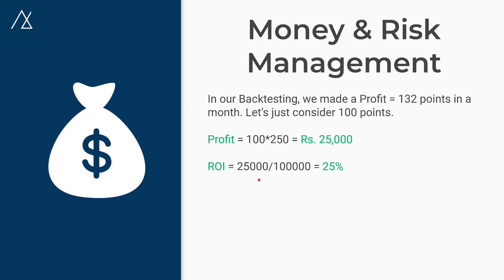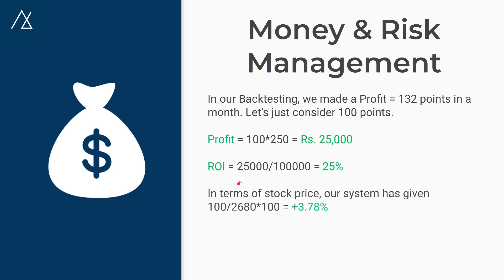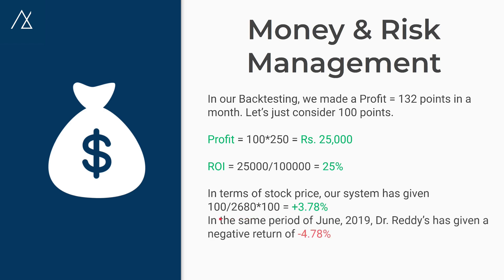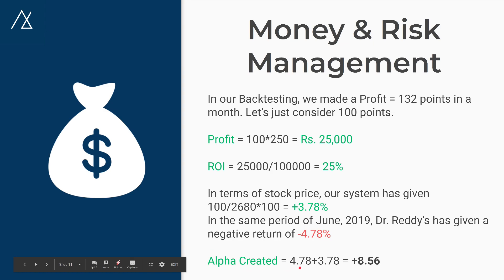In terms of stock price, the system gave a return of 100 ÷ 2680 (the opening price of June) × 100 = approximately 3.78% positive. The fun fact is that in the same period of June 2019, Dr. Reddy's Lab gave a negative return of minus 4.78%, so the alpha generated by the system is approximately 8.5%.